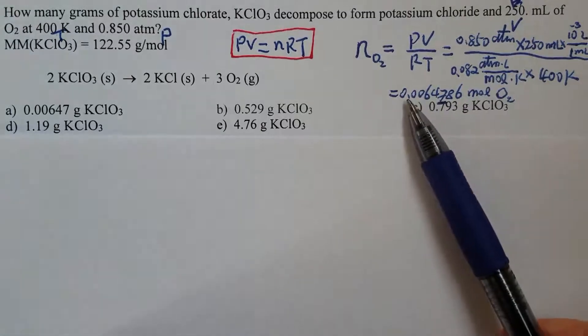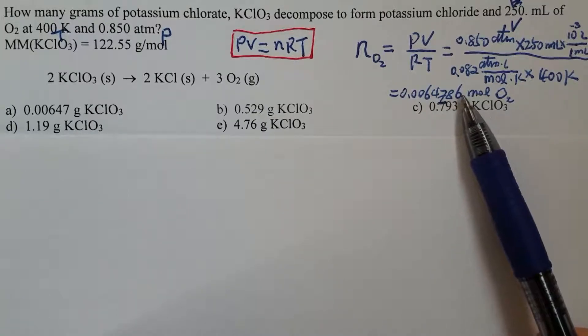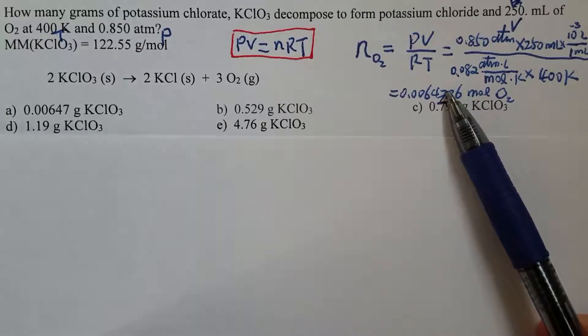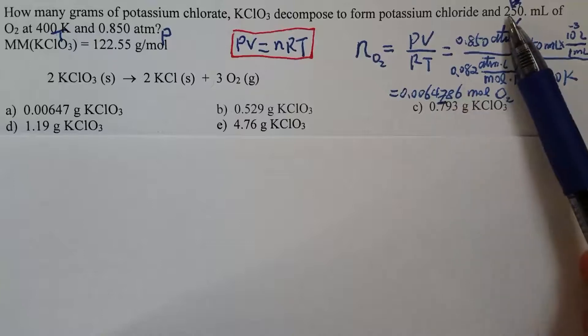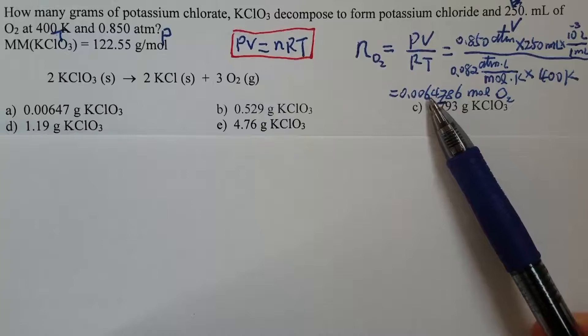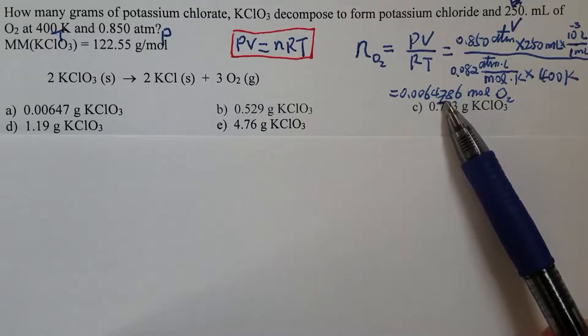Now we get 0.0064786 moles of oxygen. I underline the digit seven because that's the last digit in the significant figure. You see from the question there are three significant figures because there's a decimal point right there. Three significant figures, so therefore that's the first, second, and that's the third.